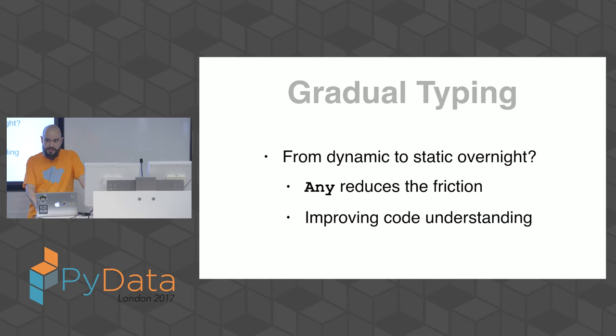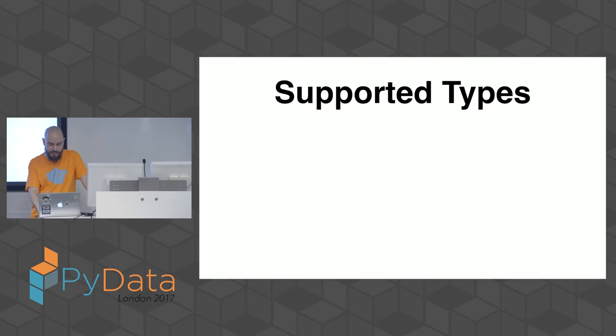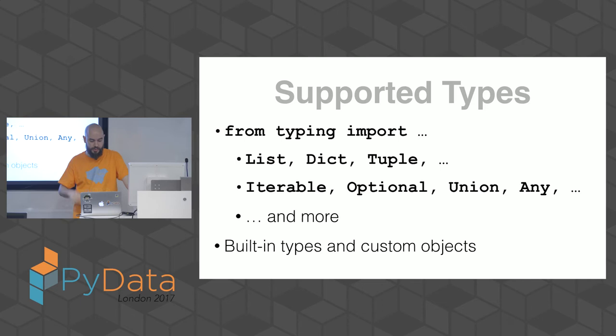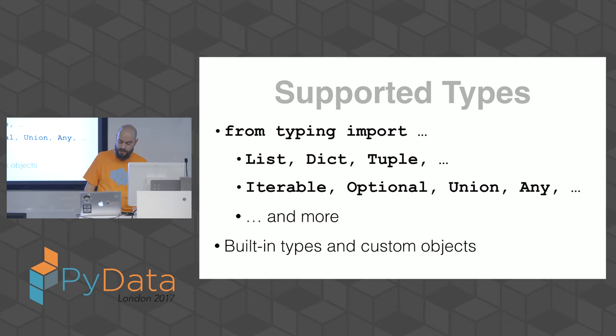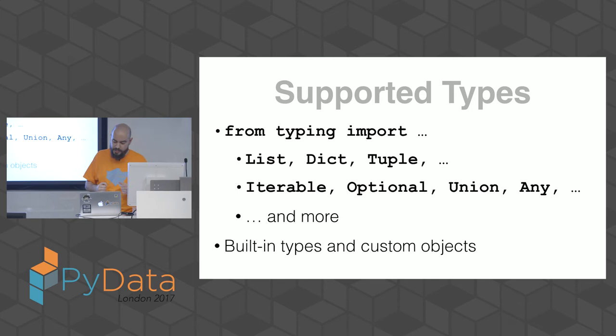The typing module supports List, Dict, Tuple, and other collection types — all indexable so you can specify what they contain. There are also Iterable objects, Optional types, Union for functions that accept arguments of different types, and Any. On top of these you can still use all built-in data types and your own custom objects.